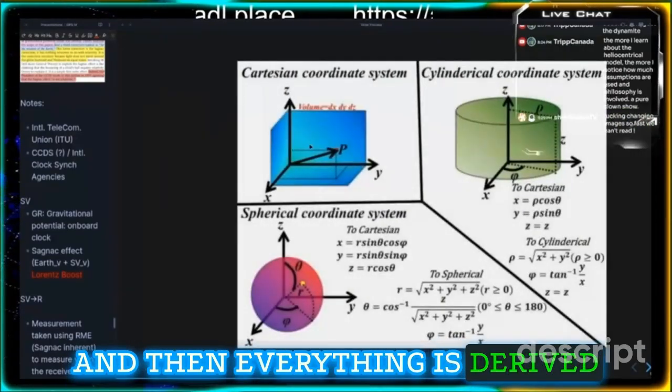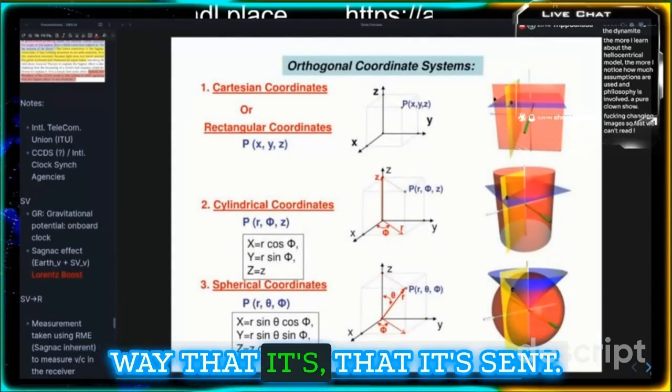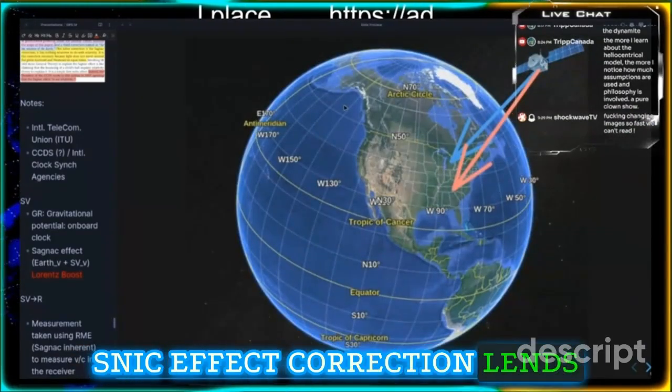And then everything is derived proportional off of that because it's just cooked into the way that it's sent. We'll get into what that Sagnac effect correction lends them the freedom to do.